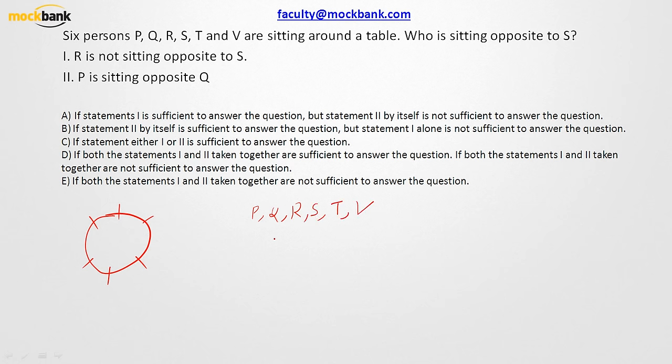If R is not sitting opposite to S, there are other four people who can sit opposite to S. So can you appreciate that if you are using statement number one, it only says that R is not sitting opposite to S. So who can sit? P or Q or T or V. Any of these four can sit opposite of S. So statement number one alone is not sufficient.